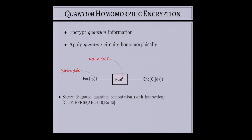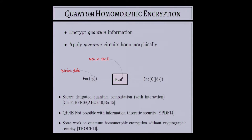There have been a few papers recently looking at quantum homomorphic encryption. For example, the work of Yu et al. from 2014 showed that quantum fully homomorphic encryption is not possible with information-theoretic security — something that was not obvious. There have also been works looking at quantum homomorphic encryption in non-cryptographic security models; for instance, Tan et al. look at bounding information leakage, but this doesn't give any kind of semantic security. Our work is the first to consider quantum homomorphic encryption with cryptographic security.